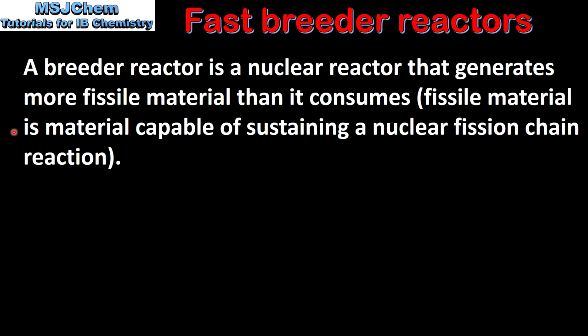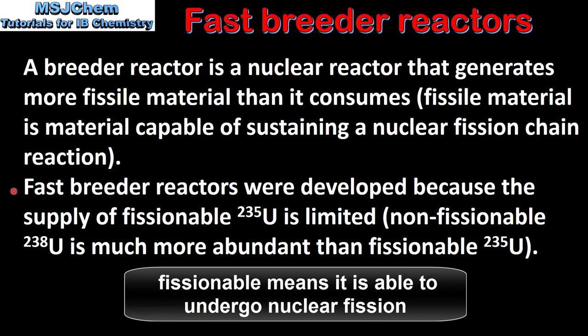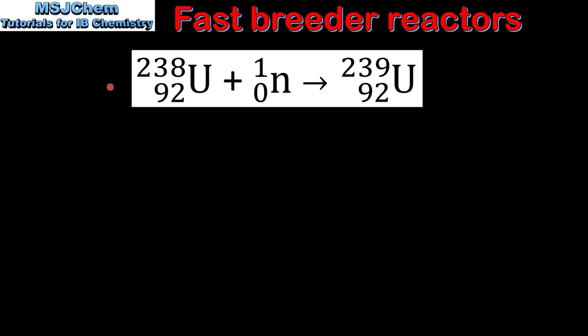Fast breeder reactors were developed because the supply of fissionable uranium-235 is limited. Non-fissionable uranium-238 is much more abundant than fissionable uranium-235. Next we'll have a look at the nuclear reactions that occur in a fast breeder reactor.